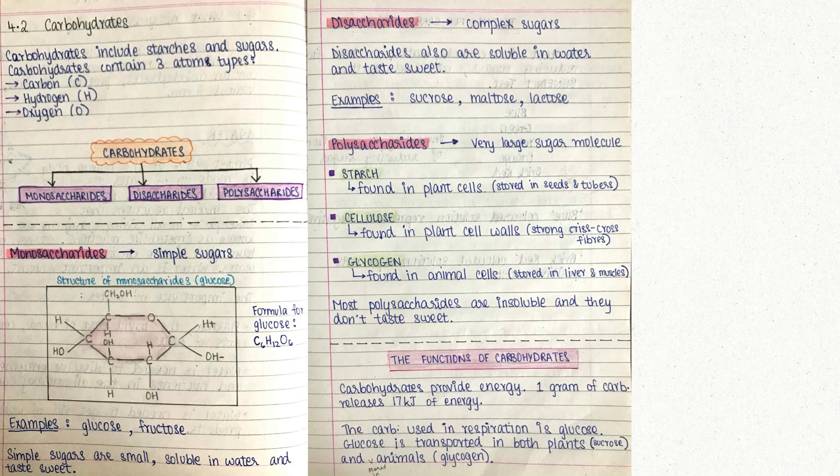All living things are made up of water as well as the three main organic compounds: carbohydrates, fats and proteins. So, let us start off with carbohydrates.